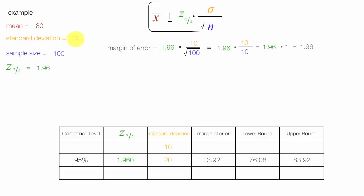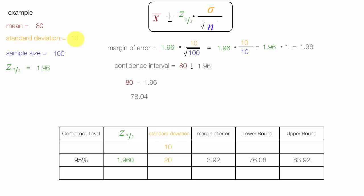The confidence interval becomes the mean, which is 80, plus or minus the margin of error. The margin of error is 1.96. The lower bound becomes 80 minus 1.96, or 78.04. The upper bound becomes 80 plus 1.96, or 81.96. Let me add all these to the table.